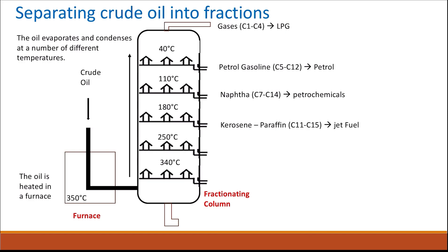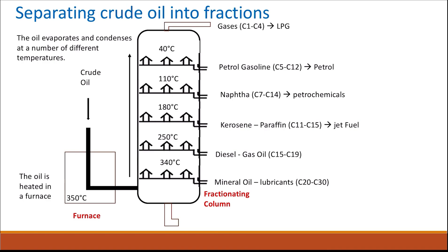At 180°C, kerosene or paraffin is collected, with carbon chains of eleven to fifteen atoms, used for jet fuel. At 250°C, diesel or gas oil is collected, with carbon chains of fifteen to nineteen atoms, used as diesel fuel. At 340°C, mineral oils used as lubricants are collected, with chains of twenty to thirty carbon atoms. At the bottom of the column is the residue — fractions that did not vaporize — including fuel oil, wax, and bitumen, with carbon chains of over thirty up to more than fifty atoms.